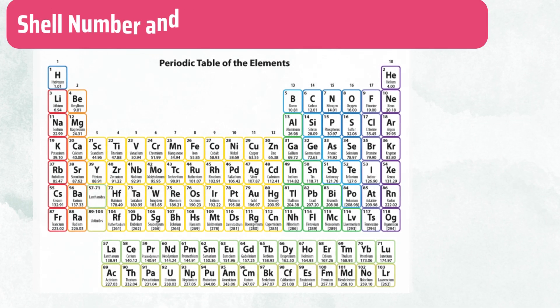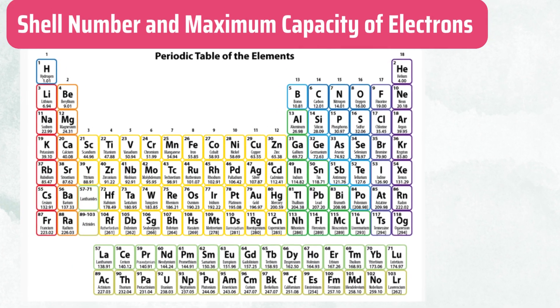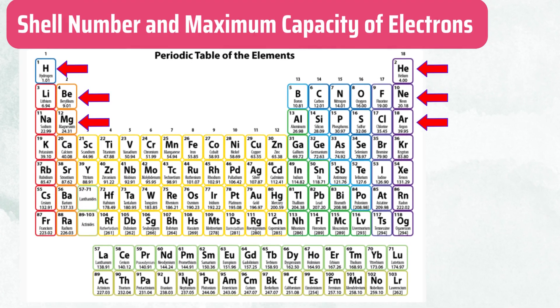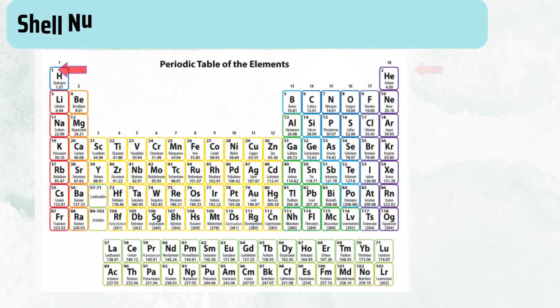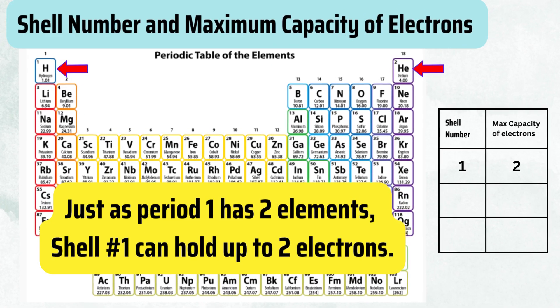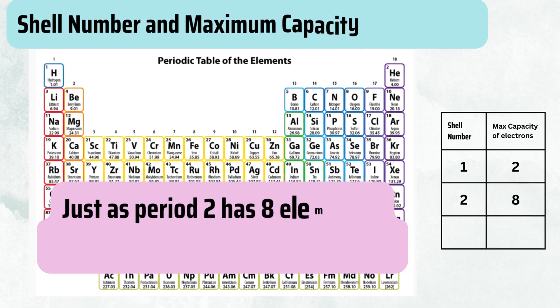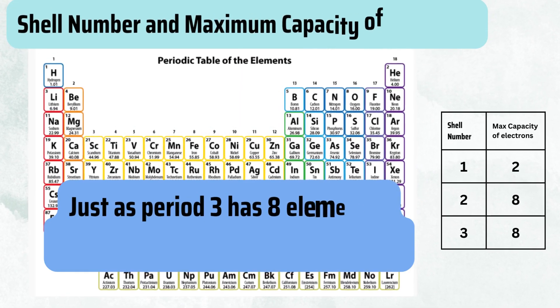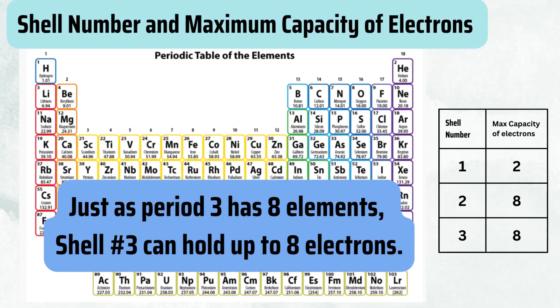Shell number and maximum capacity of electrons. Again, let us look at the first three periods of the periodic table. Just as period 1 has two elements, shell number 1 can hold up to two electrons. Just as period 2 has eight elements, shell number 2 can hold up to eight electrons. Just as period 3 has eight elements, shell number 3 can hold up to eight electrons.